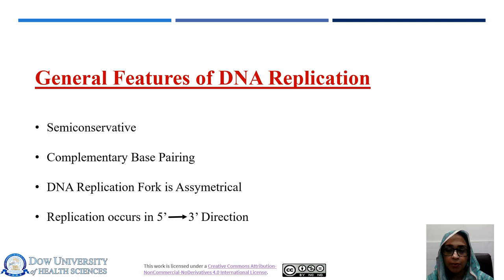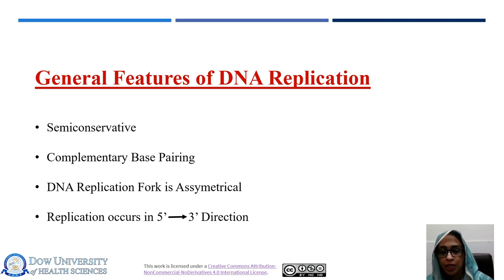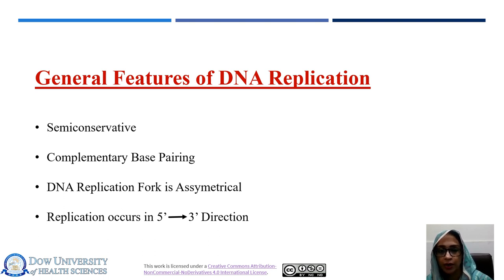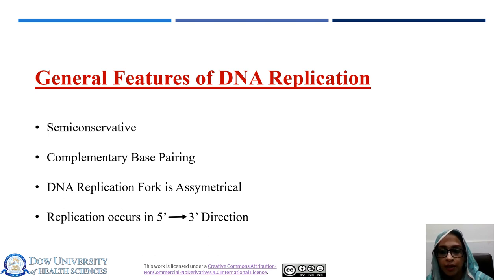We are going to talk about some of the general features of the DNA replication process. Primarily, the process of DNA replication being semi-conservative — that is holding a part of the parental DNA as part of the template. The process of replication follows Watson and Crick base pairing. The replication form being asymmetrical, the need for 5' to 3' direction of DNA replication, and the importance of accuracy required along with the process.